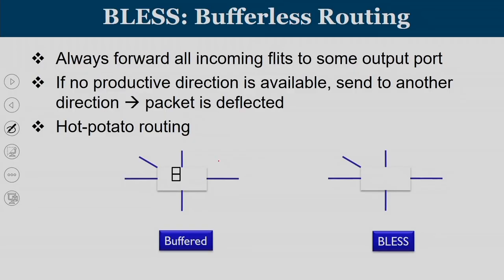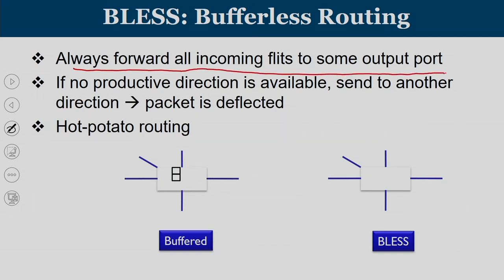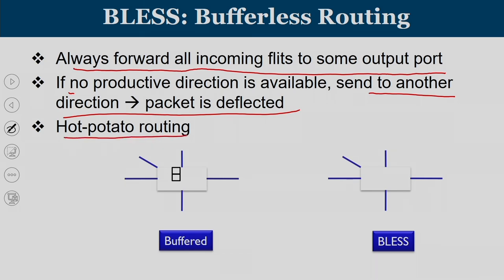Bufferless routing can be understood differently: always forward an incoming flit to some outgoing port. Whatever flits you receive, they must be forwarded to some output port. If no productive direction is available, send that flit in some other direction — that is what is called deflection. This concept is also known as hot potato routing. On the left side, you can see a buffered router where flits can be accommodated; consider two flits reaching the router at the same time.